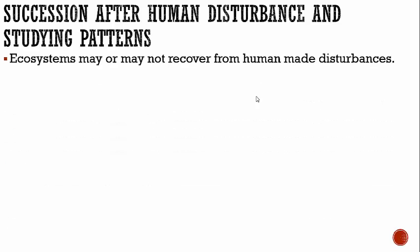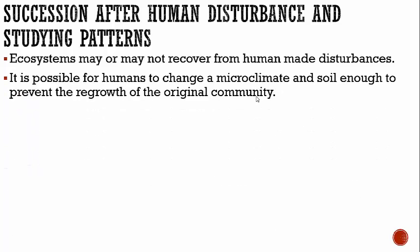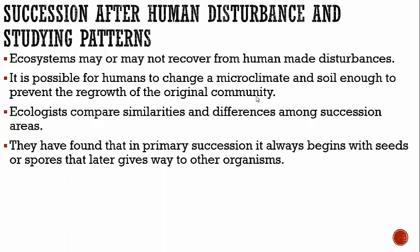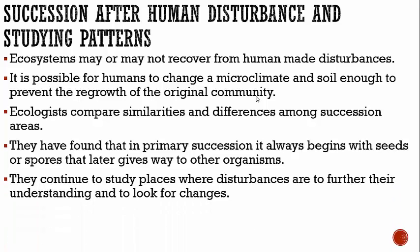Succession after human disturbance: ecosystems may or may not recover from human-made disturbances. It is possible for humans to change a microclimate and soil enough to prevent the regrowth of the original community. Ecologists compare similarities and differences among succession areas, looking at where they're the same, where they're different, and where humans have interfered. In primary succession, it always begins with seeds or spores that later give way to other organisms. They continue to study places where disturbances occur to further their understanding. Make sure you understand the difference between primary and secondary succession, and make sure you understand climax community — those are almost guaranteed to show up on your next test or state test.